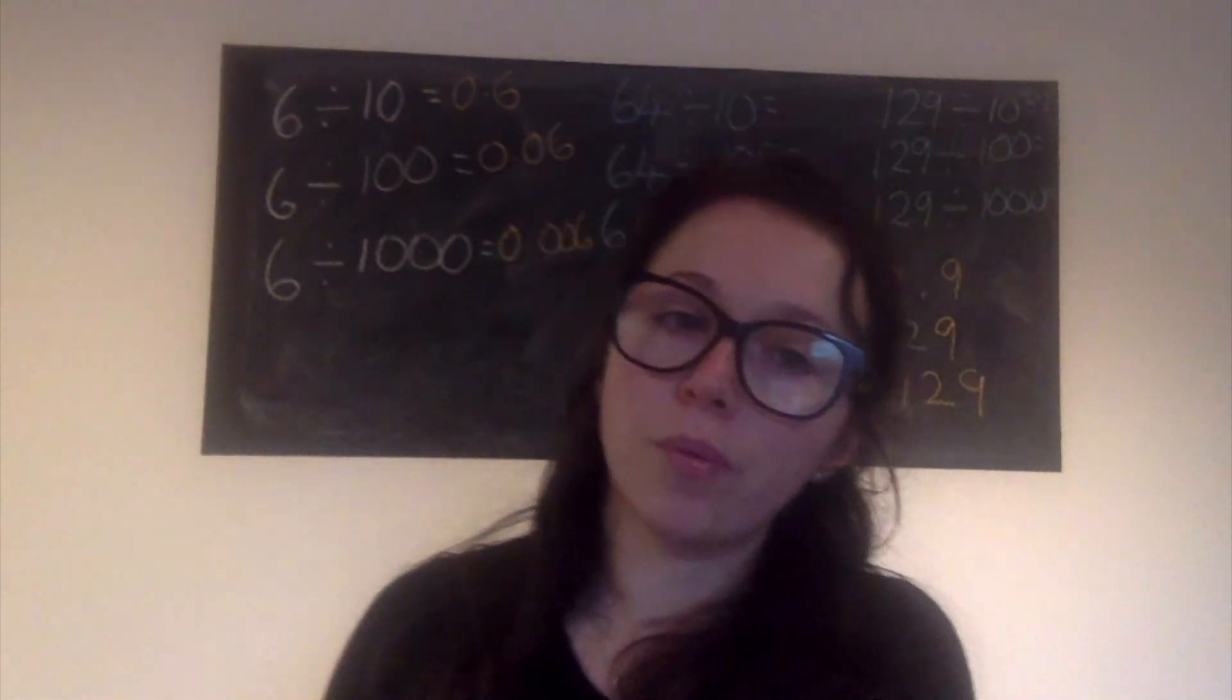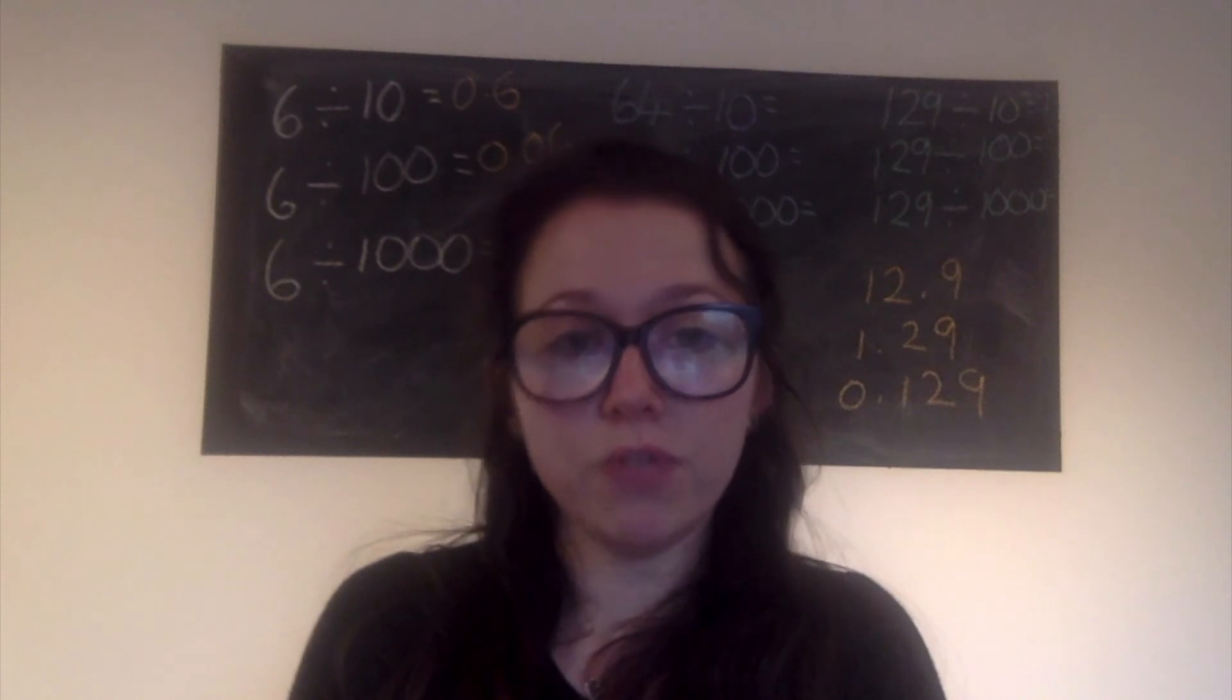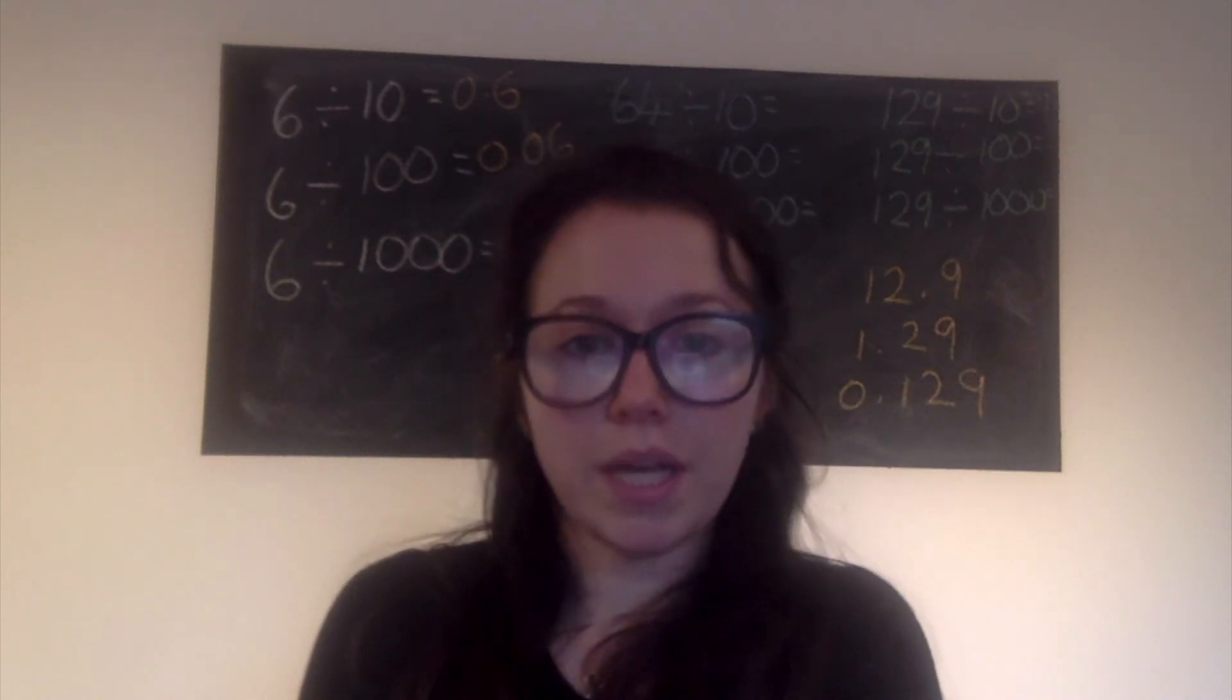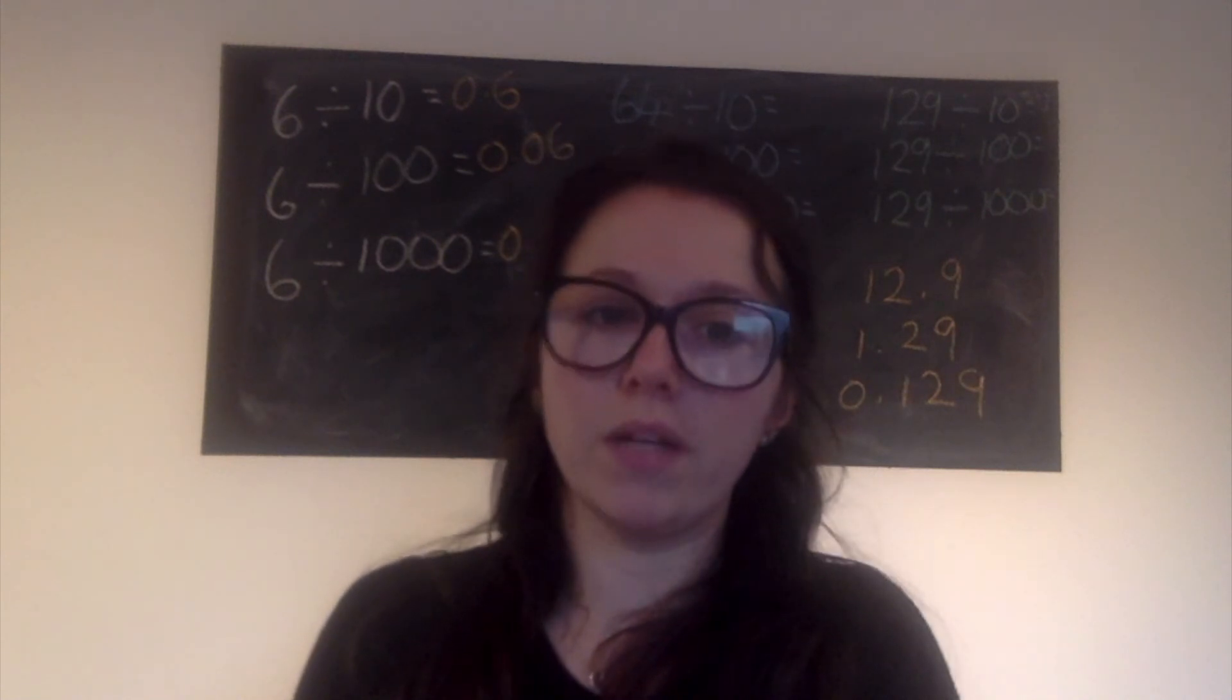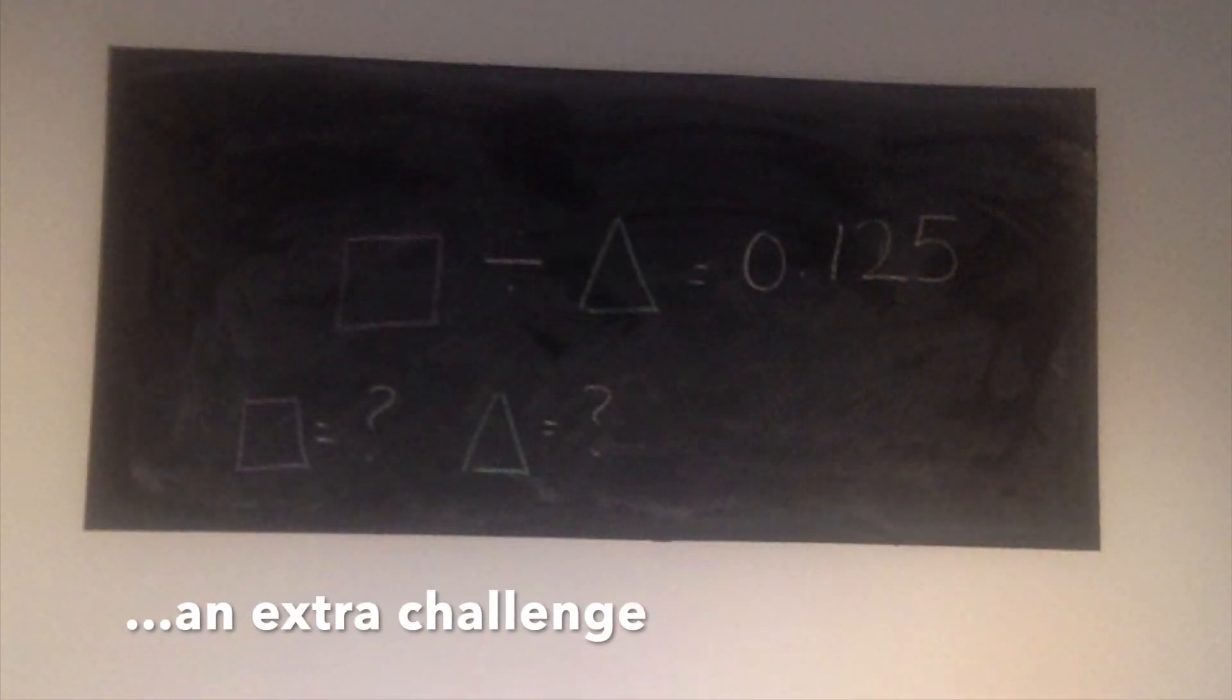And that's what you're going to be using for today's task. It is on Paper Mash. So use your place value grid, draw yourself one out. Good luck and please let me know how you get on. Any problems, please post on the blog or email us. As an extra little challenge, have a go at this. So we've got a square divided by a triangle gives us the answer of 0.215. Can you figure out what the value of the square and the triangle would be? If you get the answers, please email us, or you could put it on the end of your published work today. Good luck.